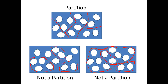A partition is just a group of disjoint (no overlap) sets that together capture all of the elements in a set. Here we can see a partition — the red lines demarcate different subsets with no overlap between them, and each subset captures all of the elements in the set. By contrast, if there is no overlap but not all elements are captured in any subset, those subsets do not partition the set. Similarly, if all elements are captured but there is overlap between subsets, those subsets also do not partition the set.